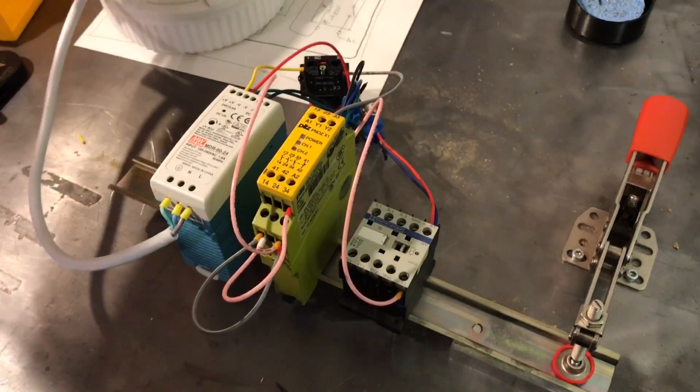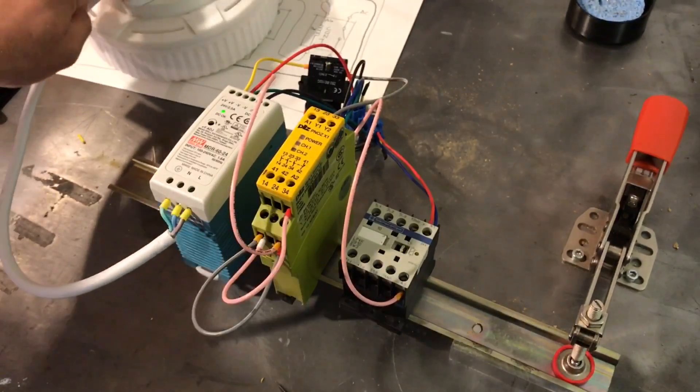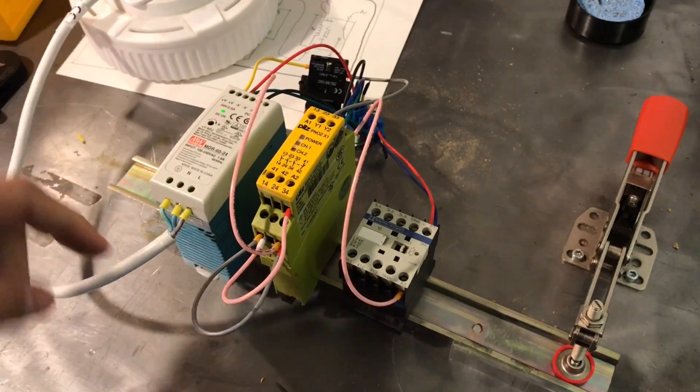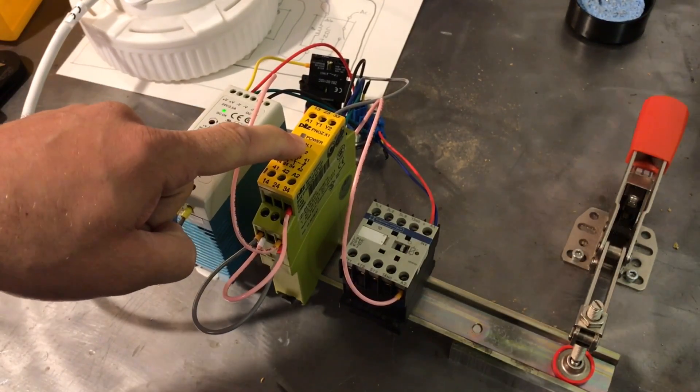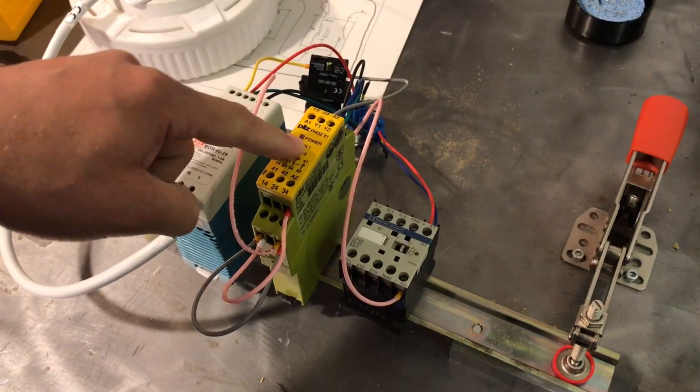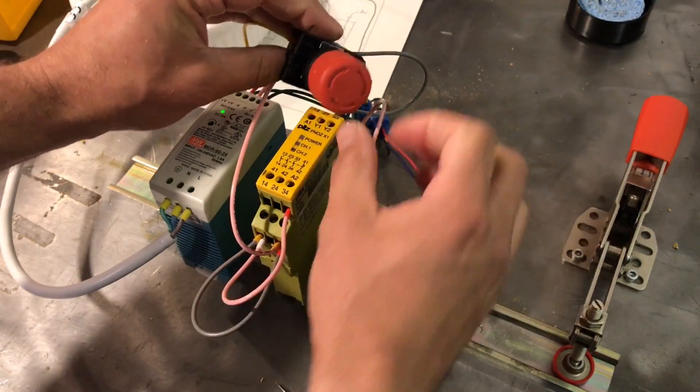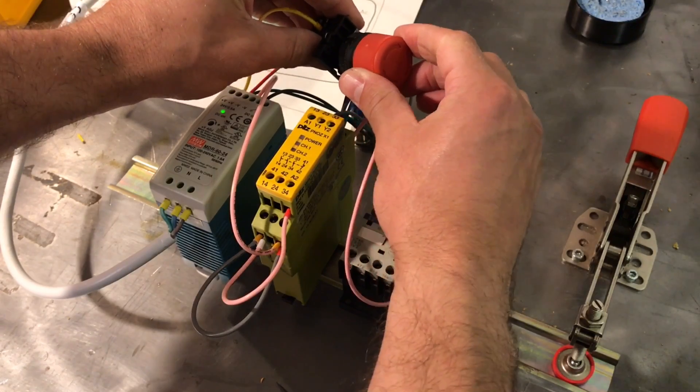Plugged it in, DC lights come on, but we have no power to the Pilz. That's because the e-stop is currently depressed.